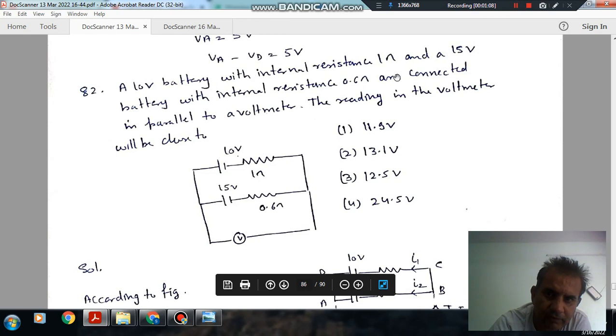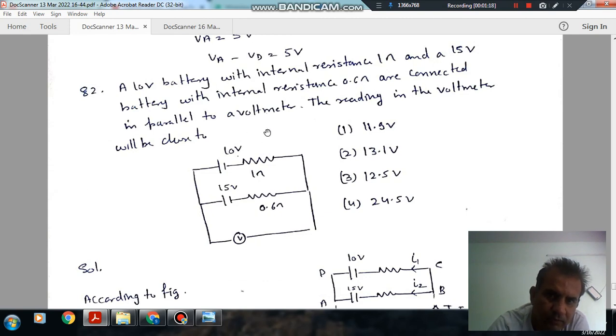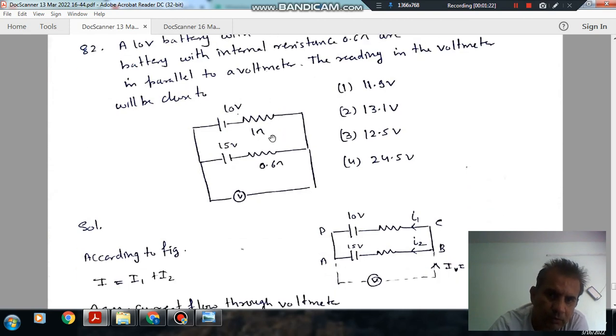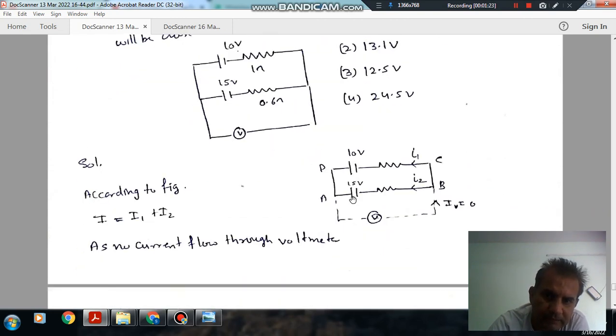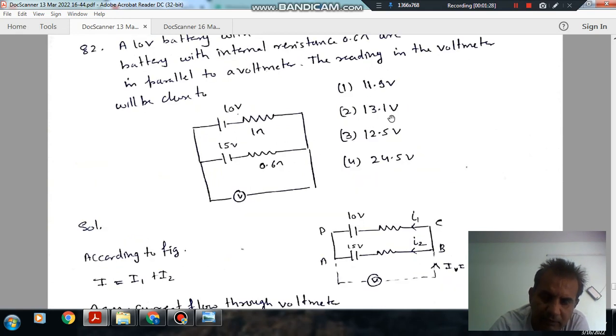A 10 volt battery with internal resistance 1 ohm and a 15 volt battery with internal resistance 0.6 ohm are connected in parallel to a voltmeter. The options are: 11.9 volt, 13.1 volt, 12.5 volt, 24.5 volt.